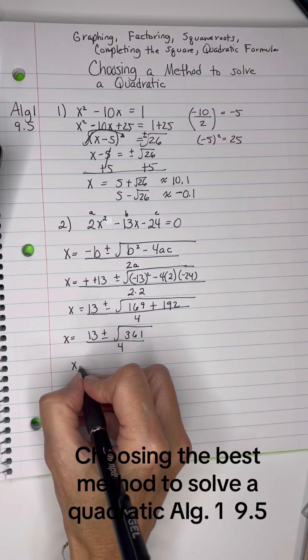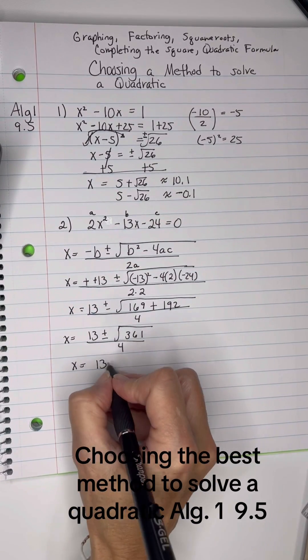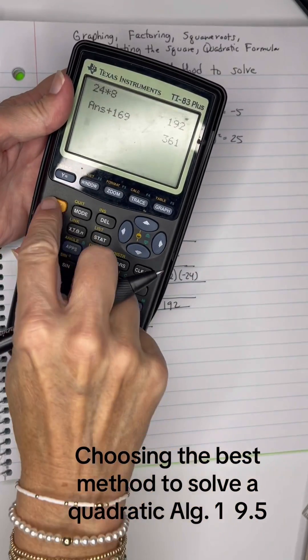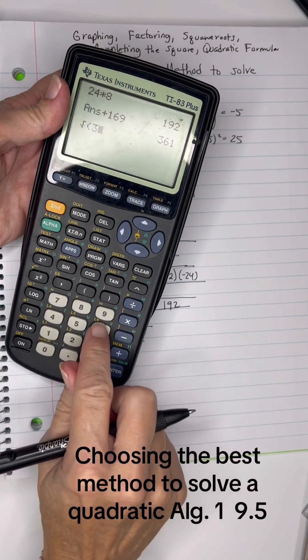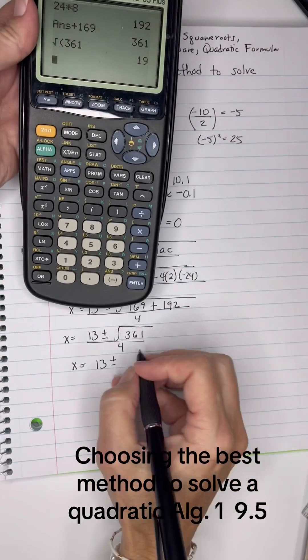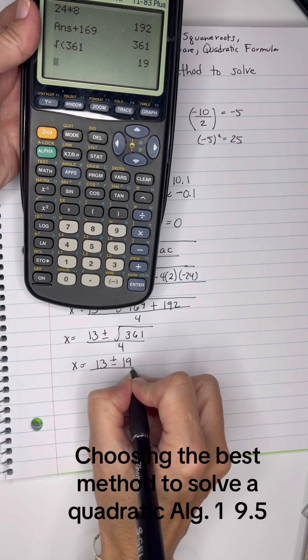Okay, so 13 plus or minus, let's see if 361 happens to be perfect. I think it is. Yep, it's 19 over 4.